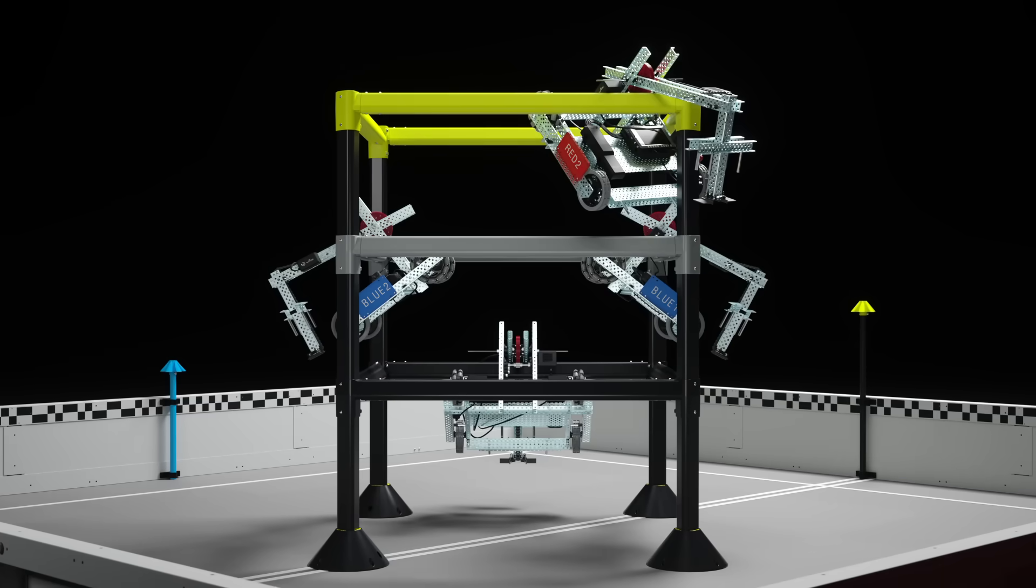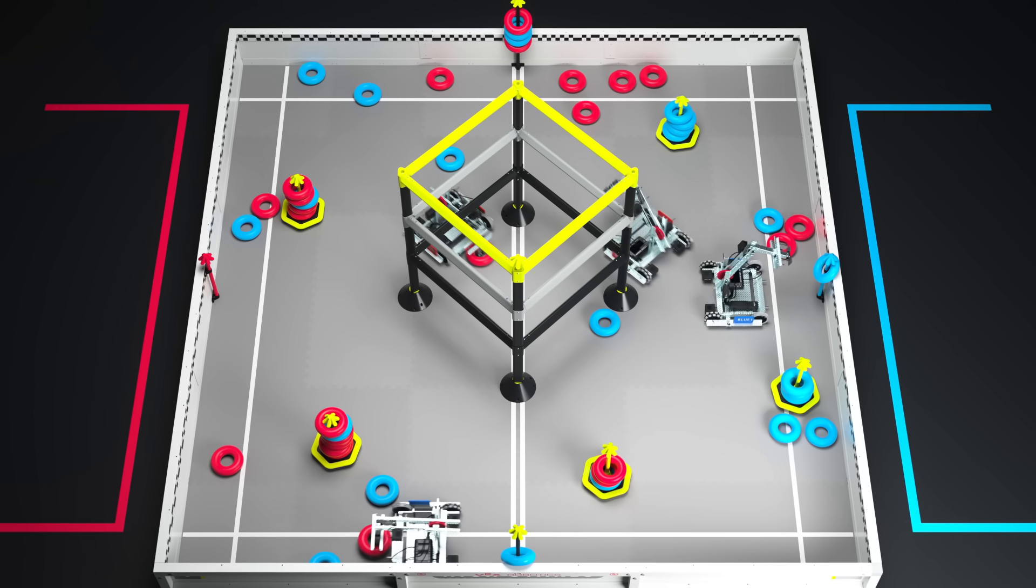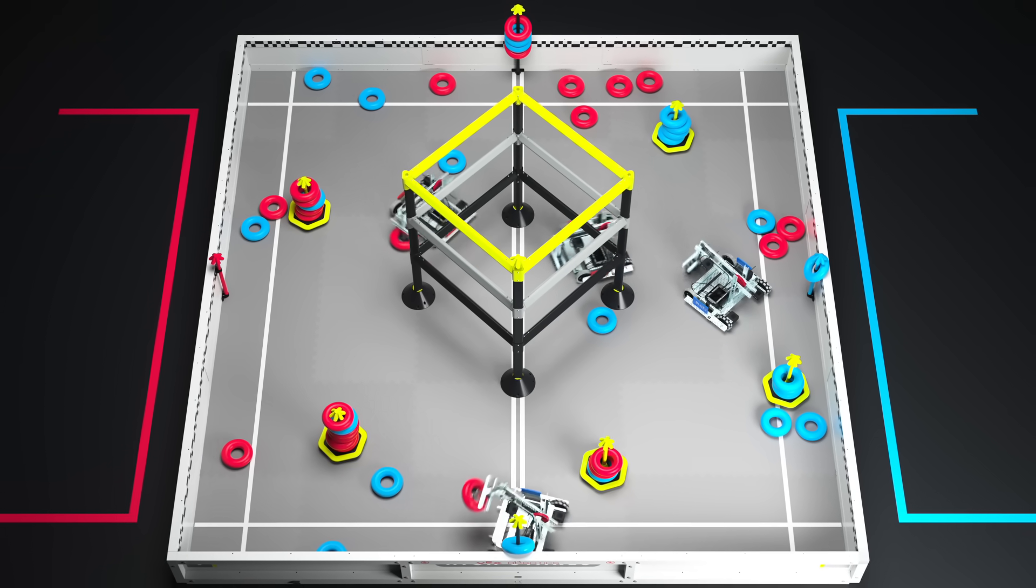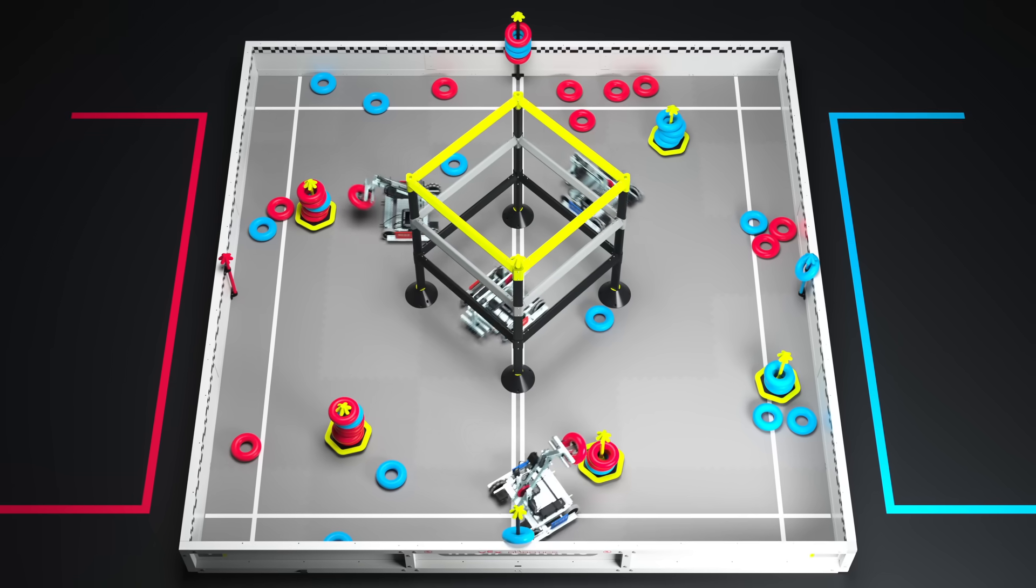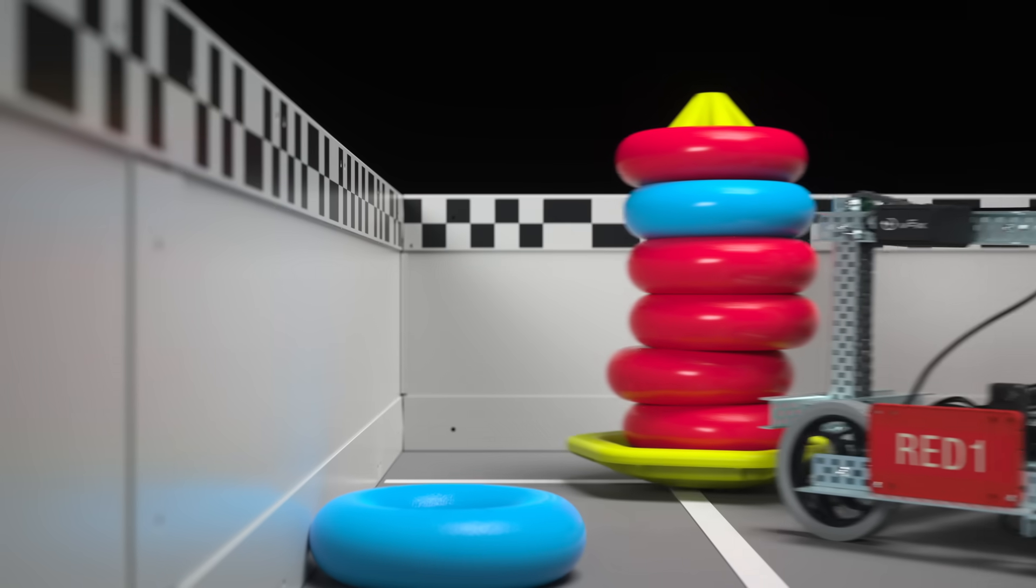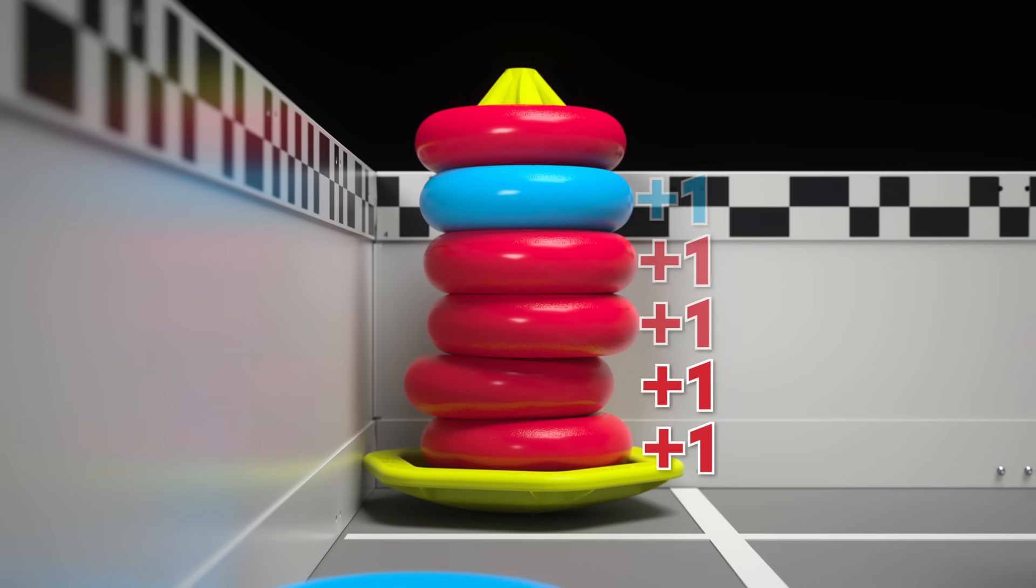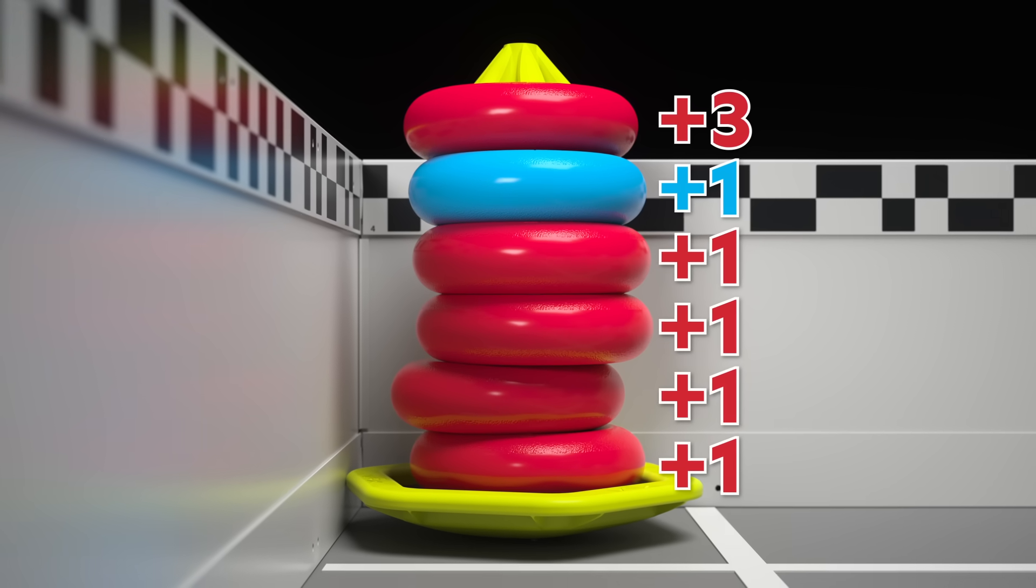One more thing. At any point during the match, mobile goals can be placed into the four corners of the field, which will modify the scores of both alliances. Two of them are positive corners. If a mobile goal is placed in a positive corner, all rings scored on that mobile goal will have their point values doubled.